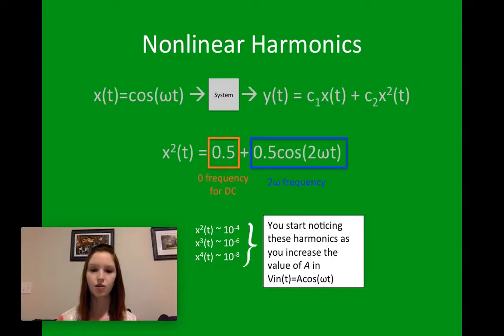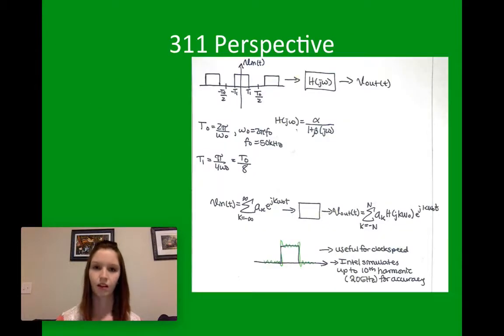So, looking at these different harmonics here, you start noticing that as you increase the value of A, over time, these really small values along a line start to actually become significant. And a lot of companies, such as Intel, will go to the tenth harmonic, just for accuracy.